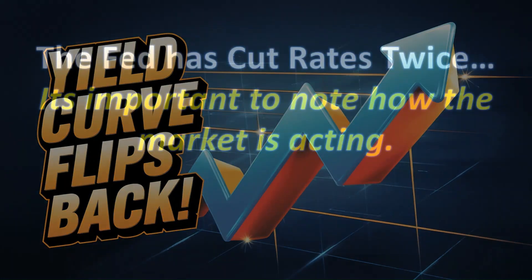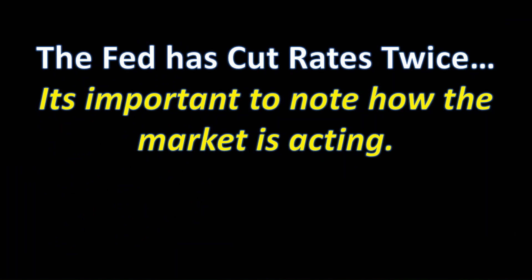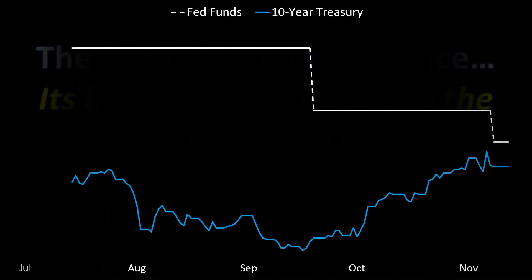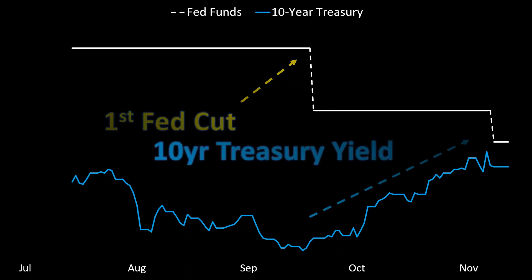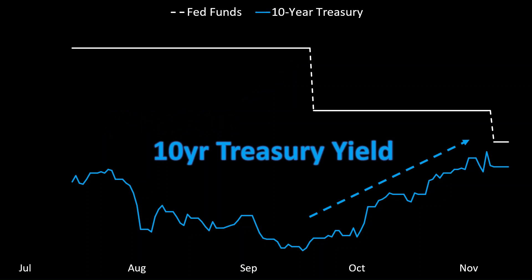The inverted yield curve has flipped back and the Fed has also cut rates twice. We're going to talk about the flipping of the inverted yield curve and why it's important. In white are the fed funds, in blue is the 10-year U.S. Treasury. The Federal Reserve cut rates for the first time by 50 basis points in September, then another quarter point about a week ago. Since that first cut in September, 10-year U.S. Treasury yields have been skyrocketing.